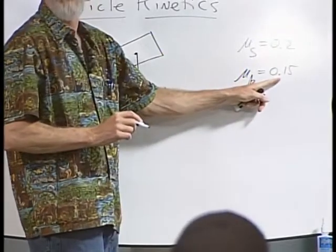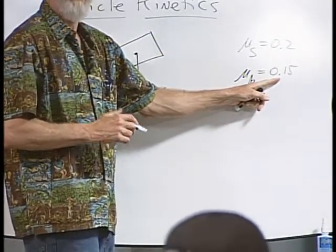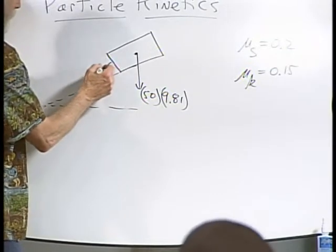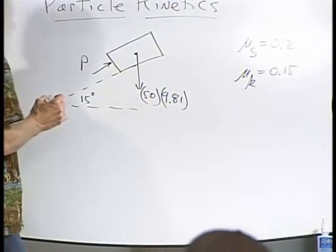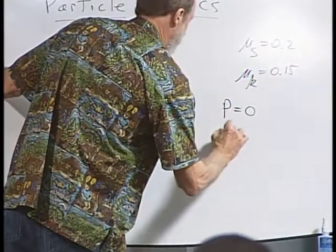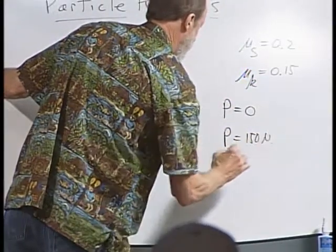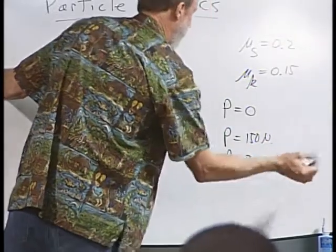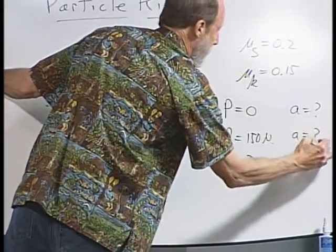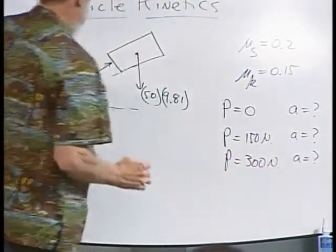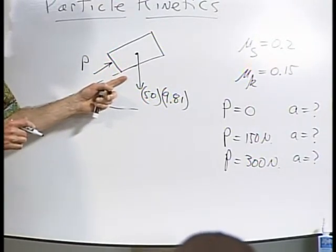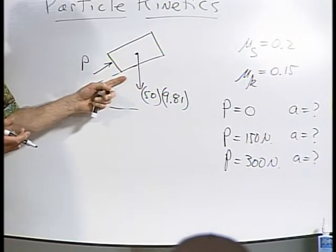So we have mu substatic is 0.2, and the mu kinetic is 0.15. Always less, at least in normal materials, based on what we talked about in the last class session. Now, we have force P applied, and the question is P takes on three different values. P equals 0, P equals 150 newtons, P equals 300 newtons. And then the question is, what's the acceleration of the block? You have to place on here then, what's missing in the drawing? A couple of things. Friction and normal force.